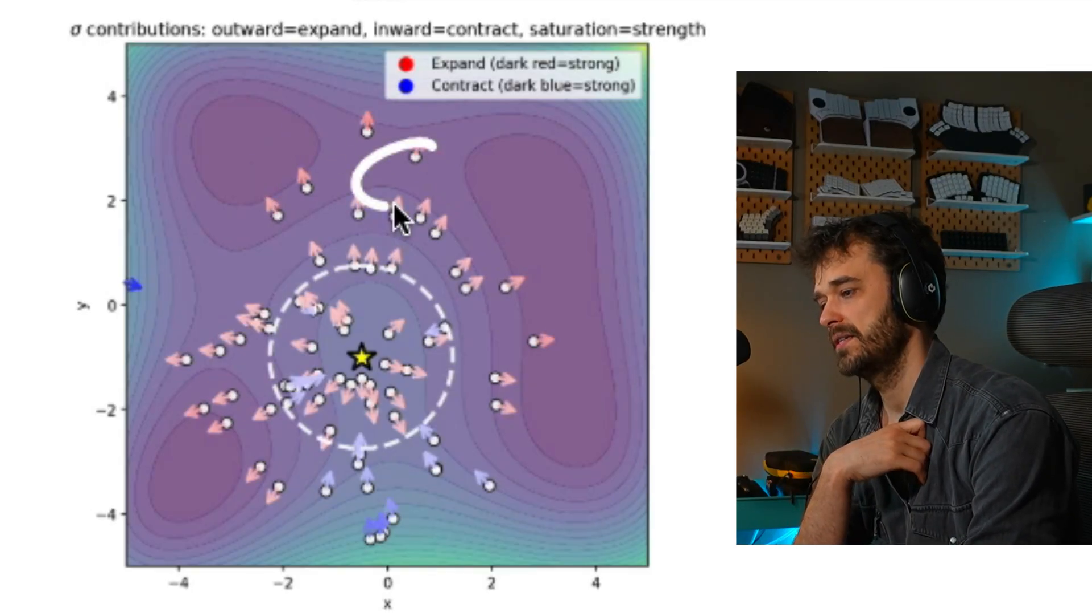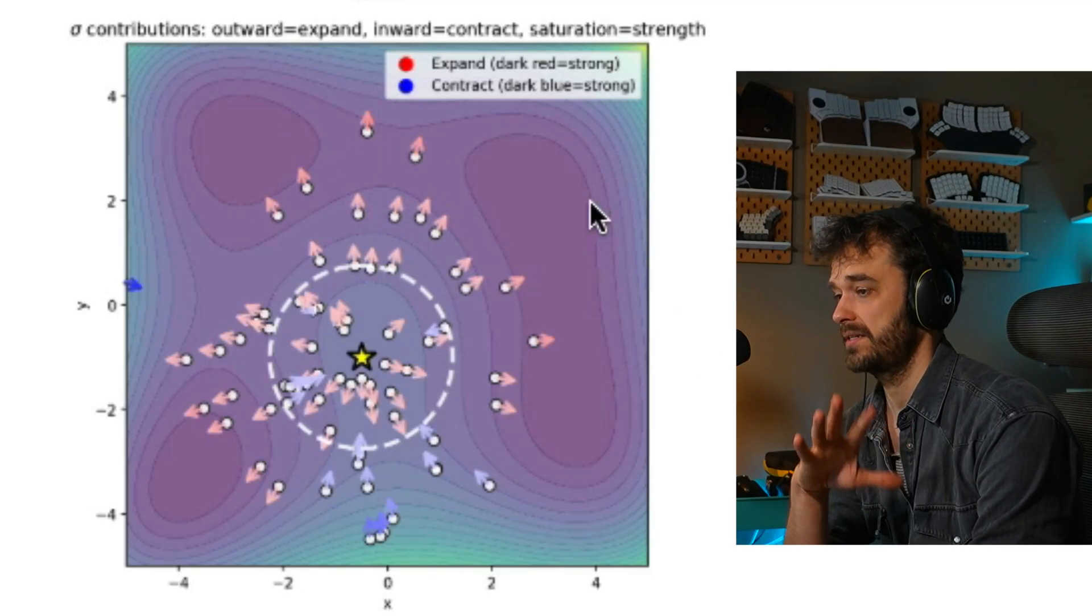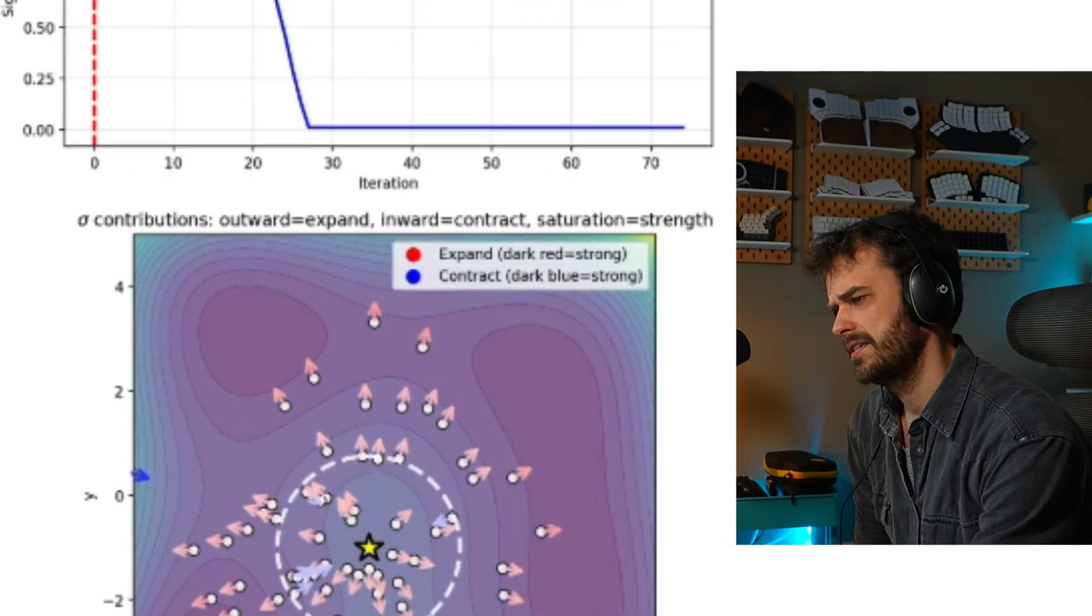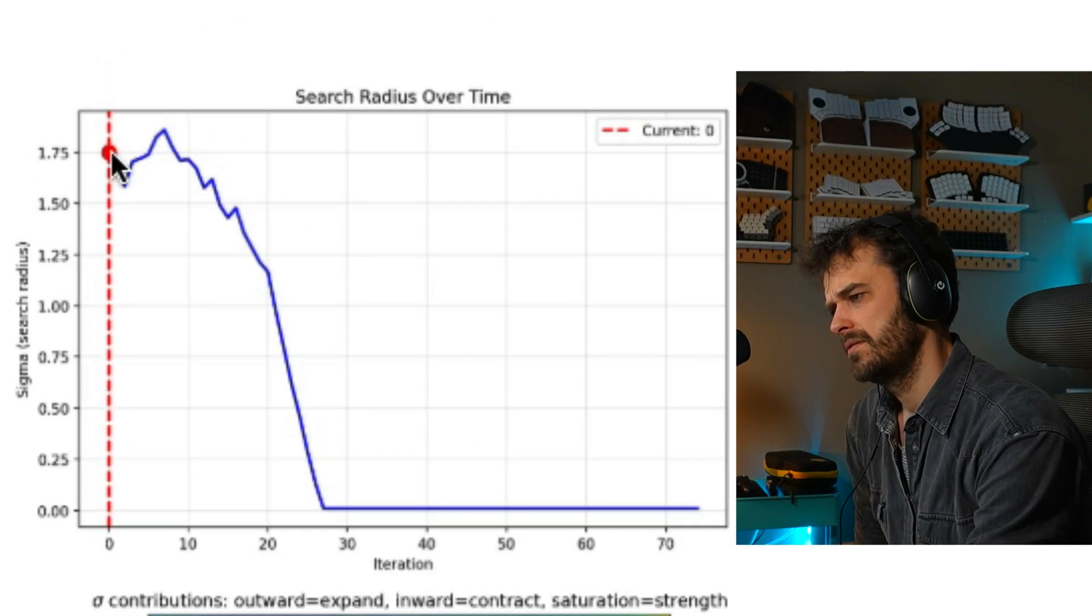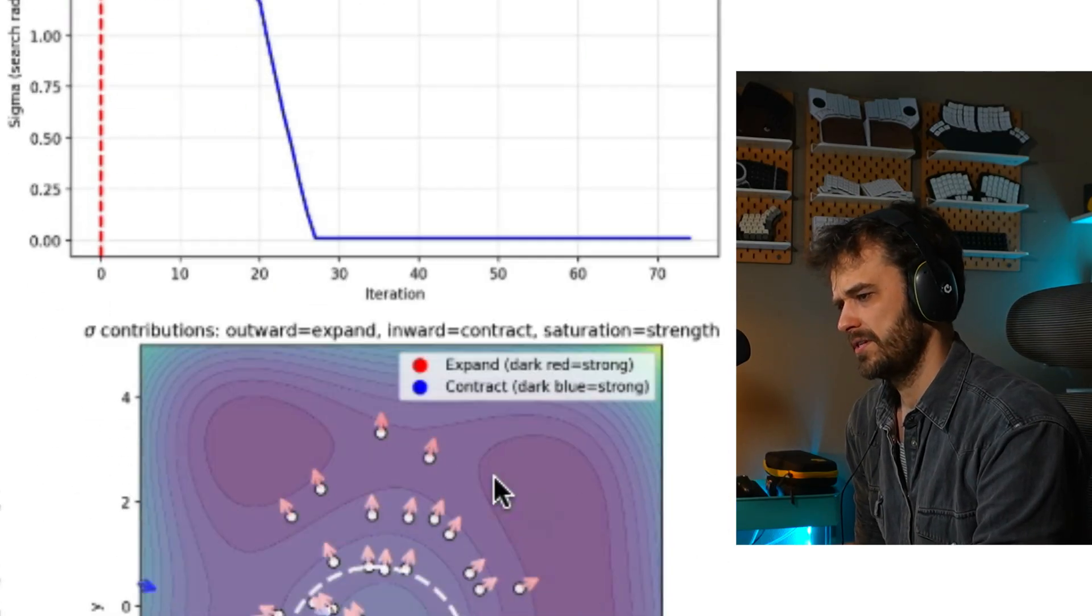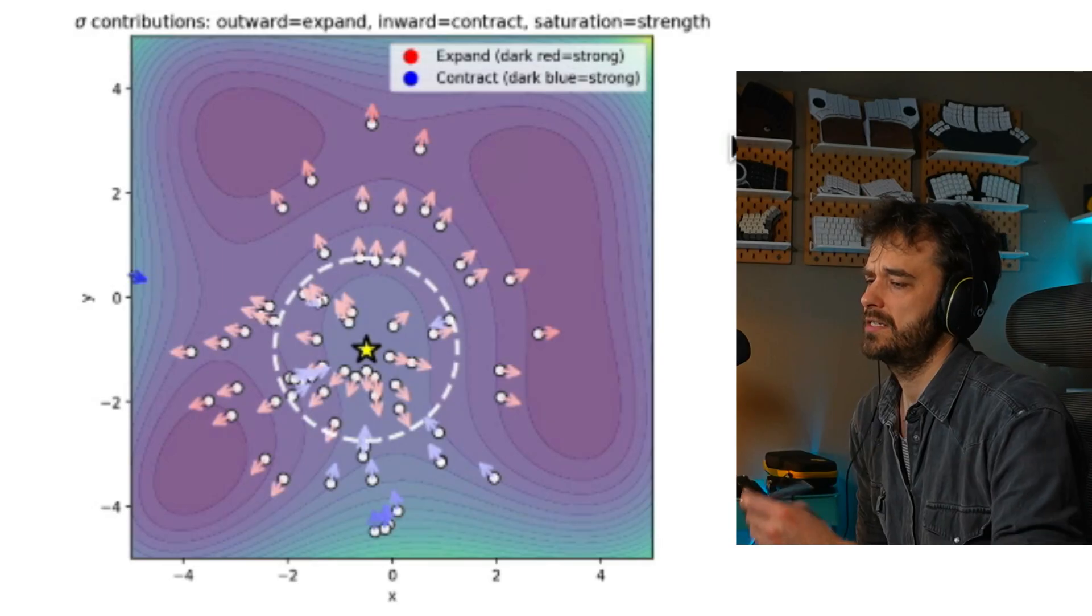And then you've got all these other points over here that suggest that it is a good idea to actually expand and move a bit bigger. It's a bit subtle, but it's nicely reflected in this chart. We start down, not low, but we do go up a little bit before we go back down again. That's because a lot of these points down below over here suggest that that's a good idea to do.